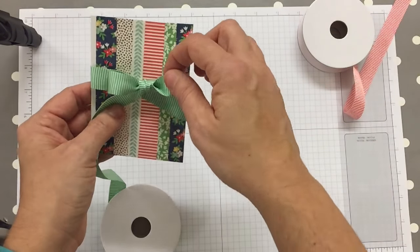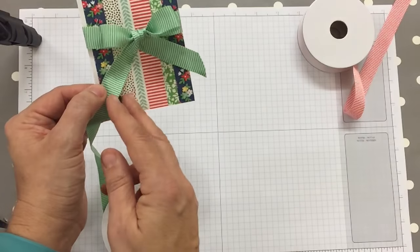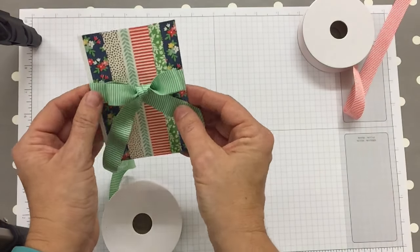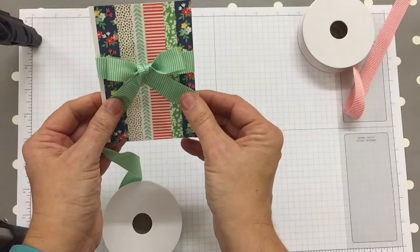Then I would trim this piece off, and I've not wasted any ribbon there because I've left it attached to the reel.